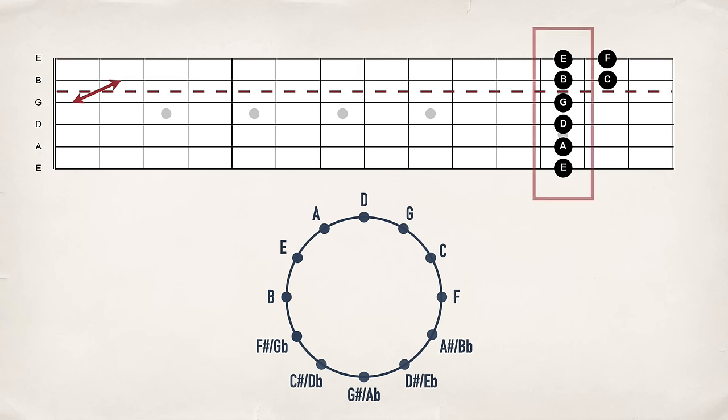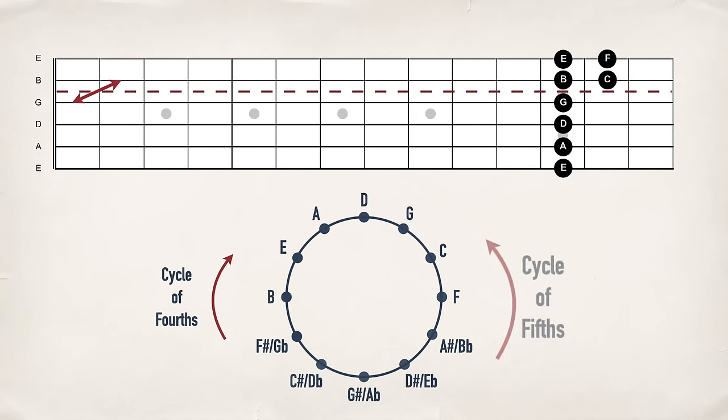So it turns out to be very useful to memorize the cycle of fourths sequence in both directions. As I've shown it here, it's the cycle of fourths going clockwise: B, E, A, D, G, C, F, and so on. And going counterclockwise, it's the cycle of fifths: F, C, G, D, A, E, B, and so on.